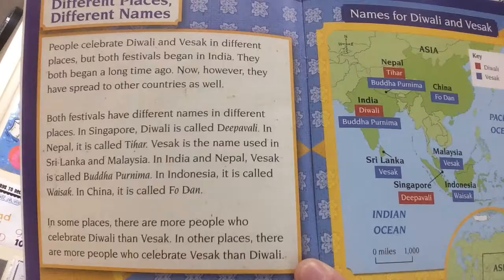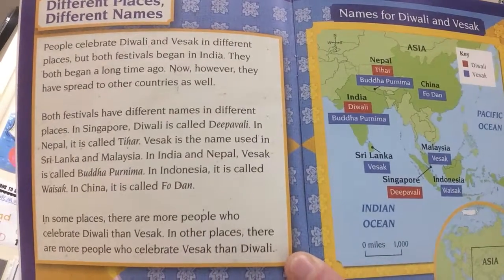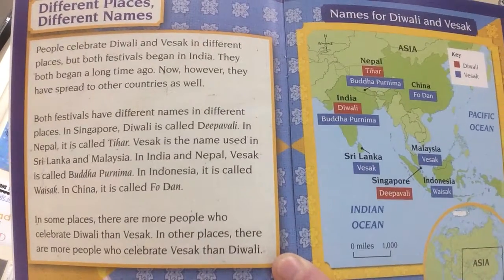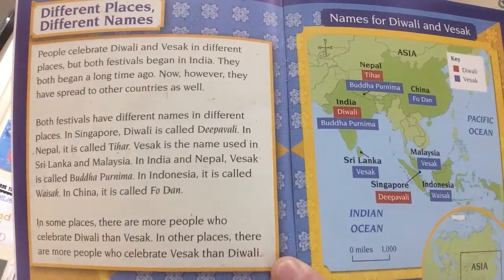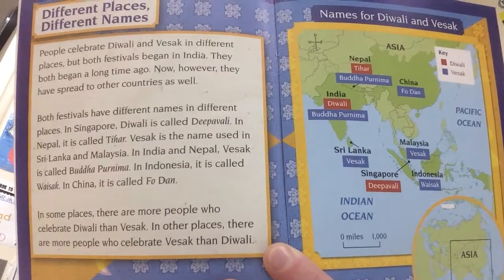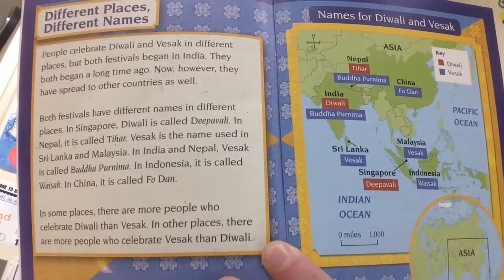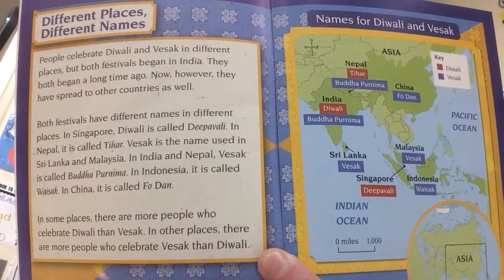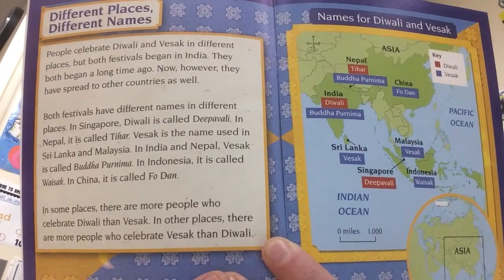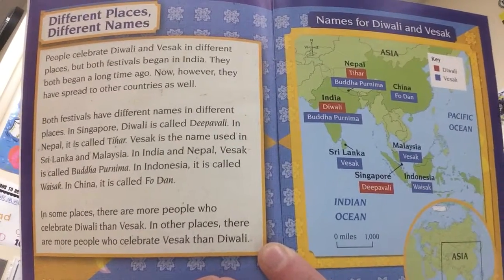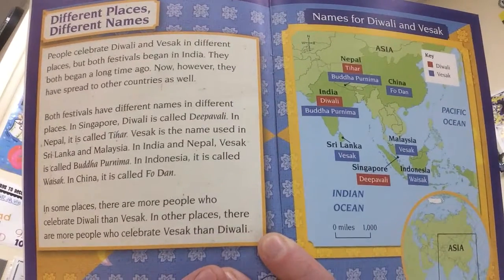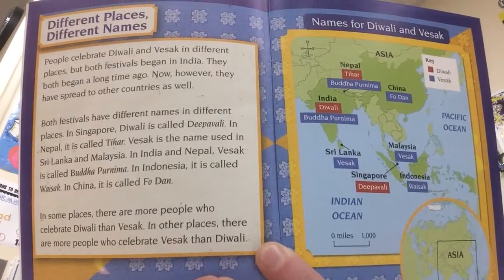Some differences are that they have different names in different places. For example, Diwali is celebrated in Singapore and Nepal. In Singapore, Diwali is known as Deepavali, and in Nepal it's known as Taihar. Vesak is also celebrated in India and Nepal, but also in Sri Lanka, Malaysia, Indonesia, and China.